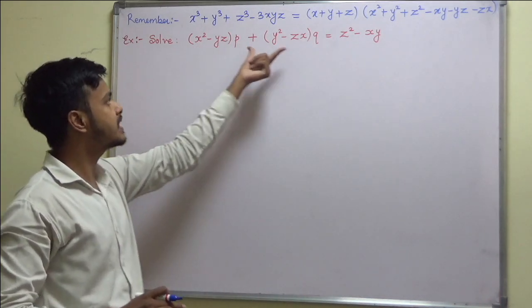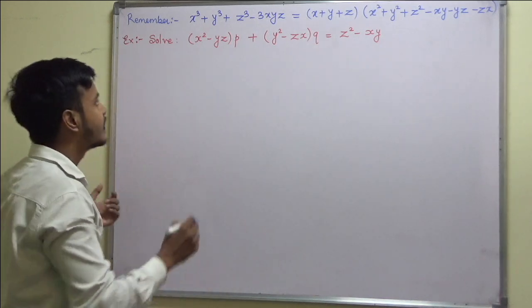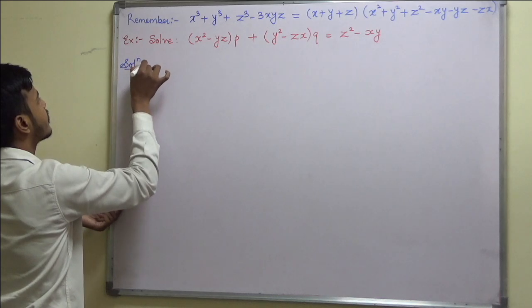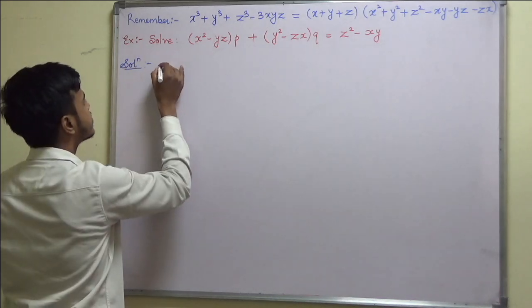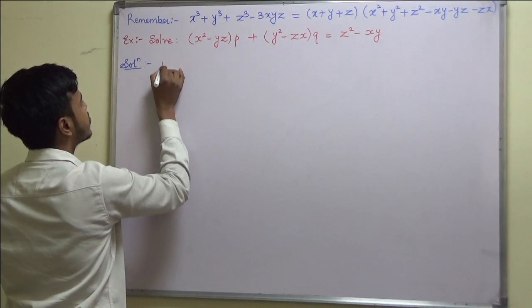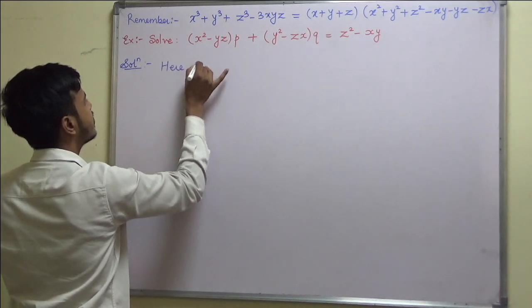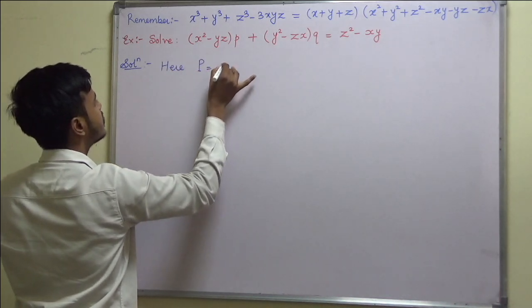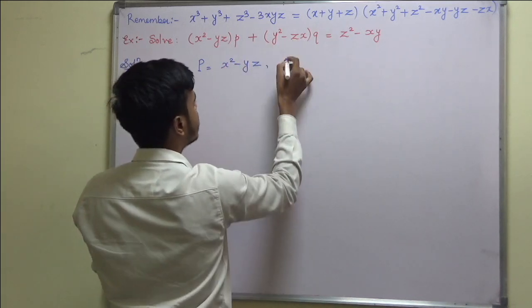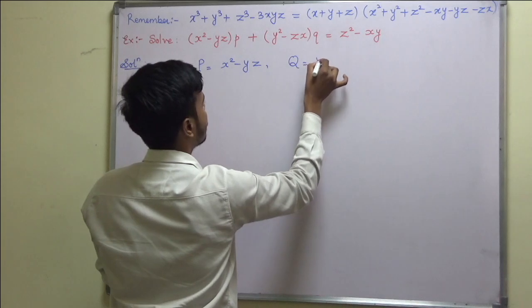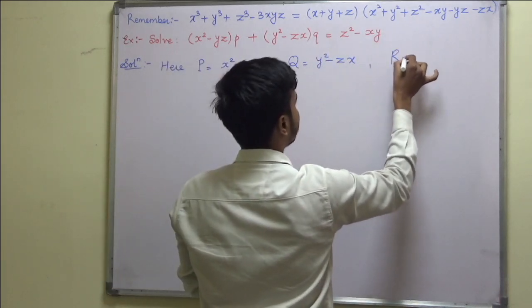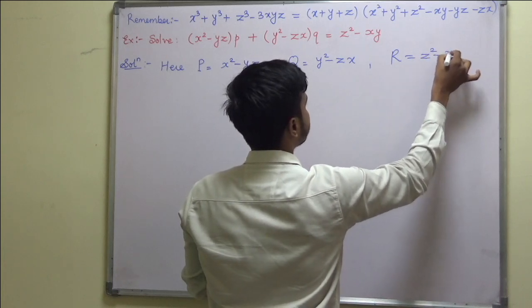This is of the form Pp + Qq = R. The given equation gives us: P = x² - yz, Q = y² - zx, and R = z² - xy.